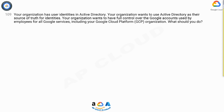Question 109. Your organization has user identities in Active Directory. Your organization wants to use Active Directory as their source of truth for identities. Your organization wants to have full control over the Google accounts used by employees for all Google services, including your Google Cloud Platform (GCP) organization. What should you do?